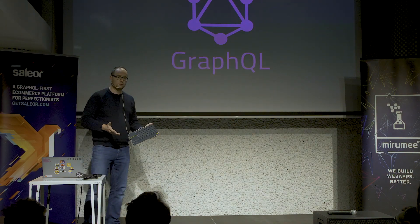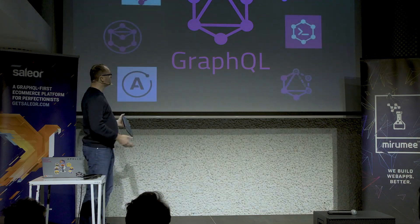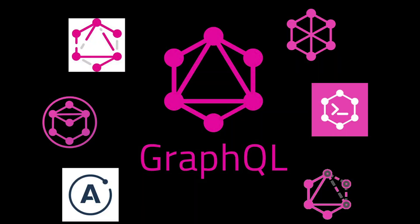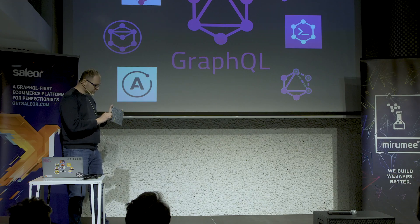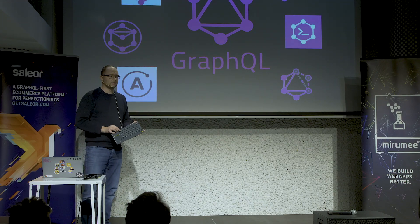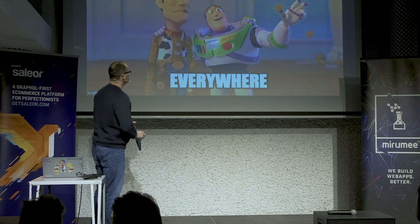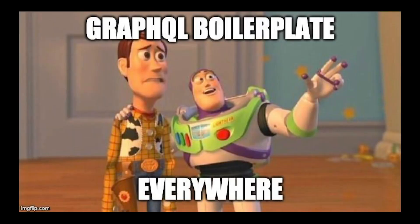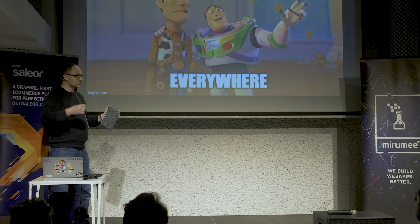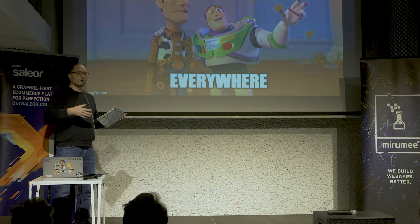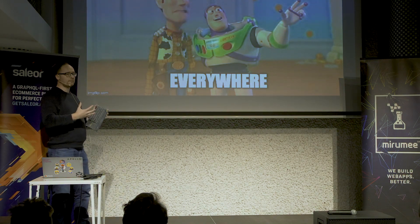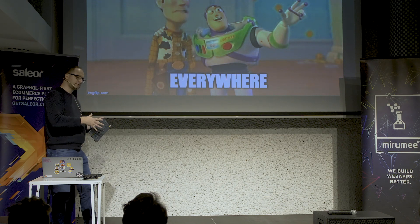GraphQL — we all know it, but it comes with the price of having so many libraries, and they update faster than sandwiches. So there is this decision of what kind of framework I will use, what kind of library, and so on. And GraphQL itself, by definition, is also filled with boilerplate. You need to generate those documents for the client side, you need to have resolvers, schema — all that takes your mental capacity and takes you out of your business knowledge.